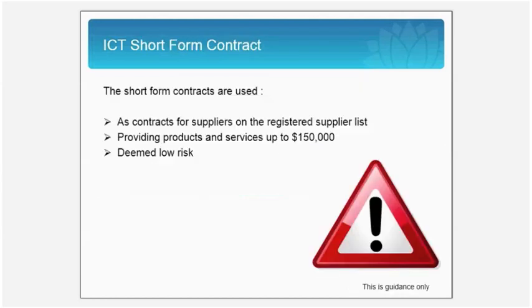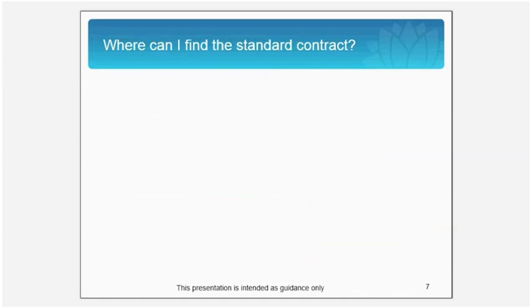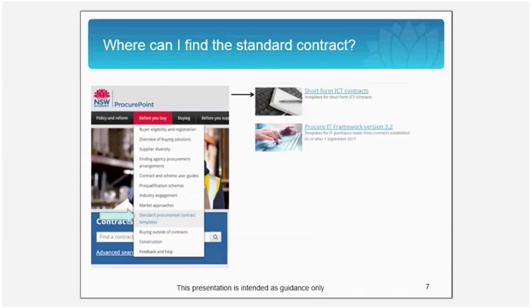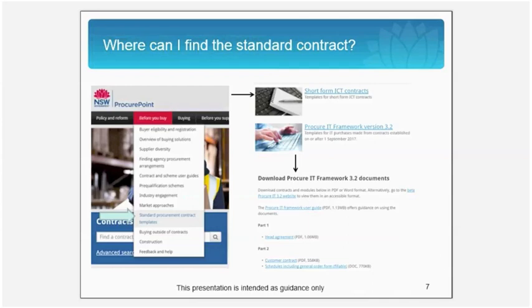The Procure IT framework must be used by NSW Government buyers for the acquisition of ICT related products and services. The short form contract is specifically used when engaging with suppliers on the registered supplier list, who are providing products and services up to $150,000 and are deemed low risk. You can find a copy of the contract by navigating through ProcurePoint and clicking on 'Before You Buy', then the Standard Procurement Contract Templates link, then the Short Form Contracts link, which takes you to a beta website housing all the contract documents.